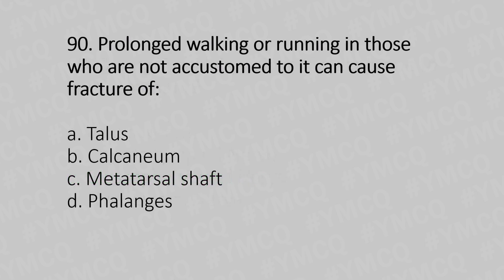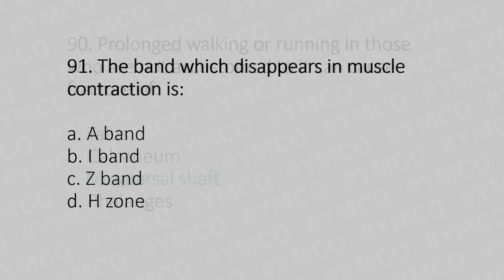Question 90: Prolonged walking or running in those not accustomed to it can cause fracture of — option A: talus; option B: calcaneum; option C: metatarsal shaft; option D: phalanges. The answer is option C: metatarsal shaft. Question 91: The band which disappears in muscle contraction is — option A: A band; option B: I band; option C: Z band; option D: H zone. The answer is option D: H zone.